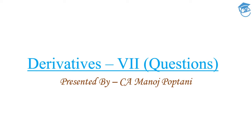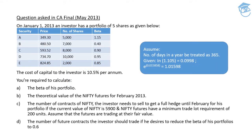The first question of the day was asked in the CA final examination for May 2013. It says on January 1, 2013, an investor has a portfolio of 5 shares as given below. They have provided us a table which says security A, B, C, D, E. Security A is having a price of 349.30, B security is having a price of 480.50, C security is having a price of 593.52, security D is having a price of 734.70, and security E is having a price of 824.85.